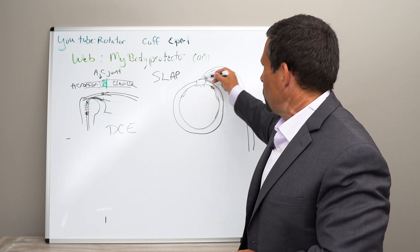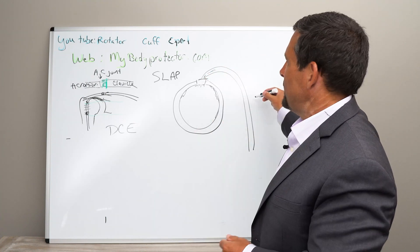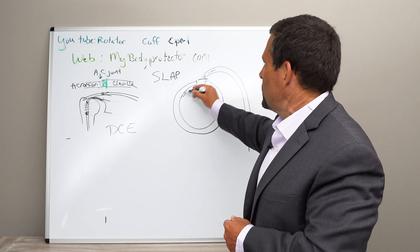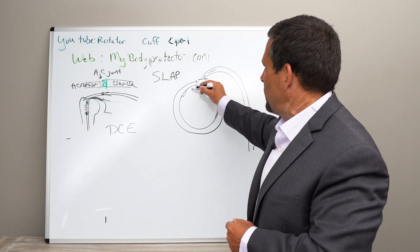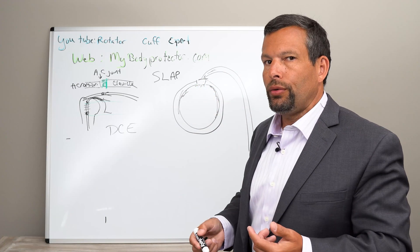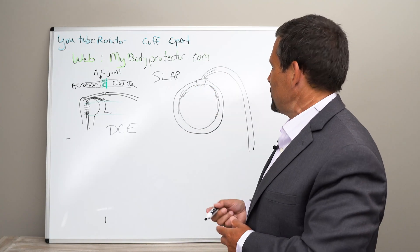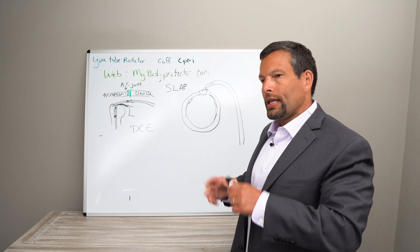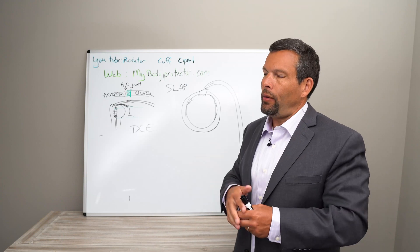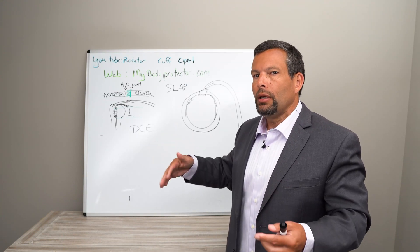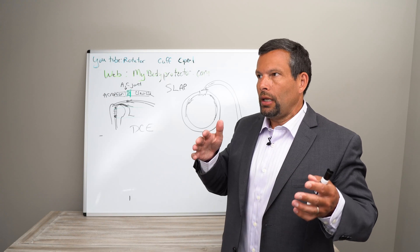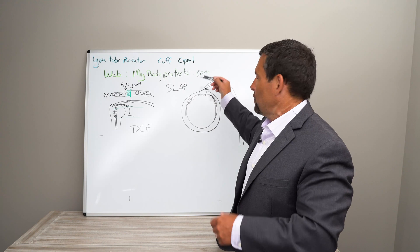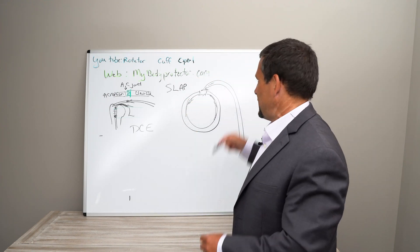We'll clean up the labrum, release the biceps so it's not pulling on that tear, and reattach it somewhere else. If we have the SLAP tear, we fix it here or we debride it, and depending on where exactly the tear goes would determine what we do. Different kinds of SLAP tears occur from different injuries and different age groups. So the most common that we would see in an older adult population in addition to rotator cuff repairs, which could be unstable or fraying, we treat similarly in that we release it and reattach it somewhere else.